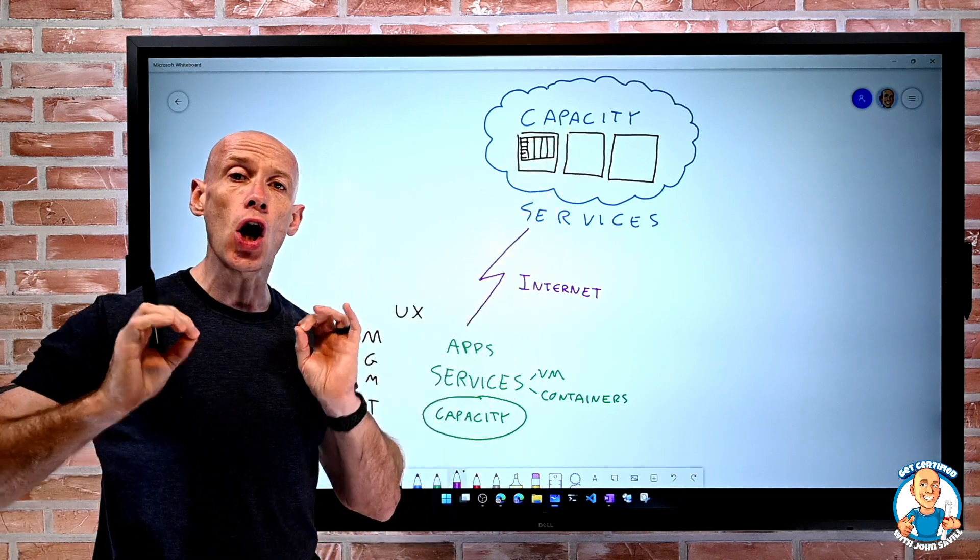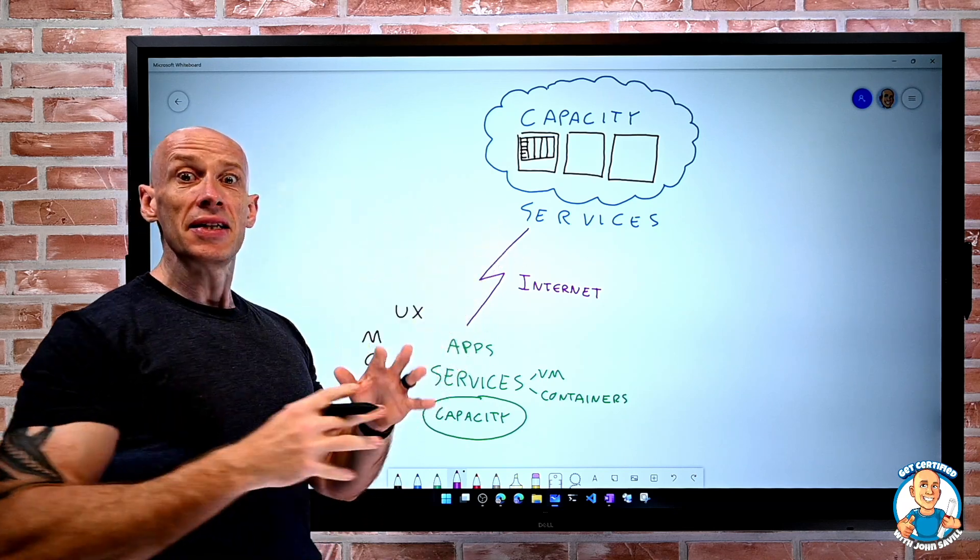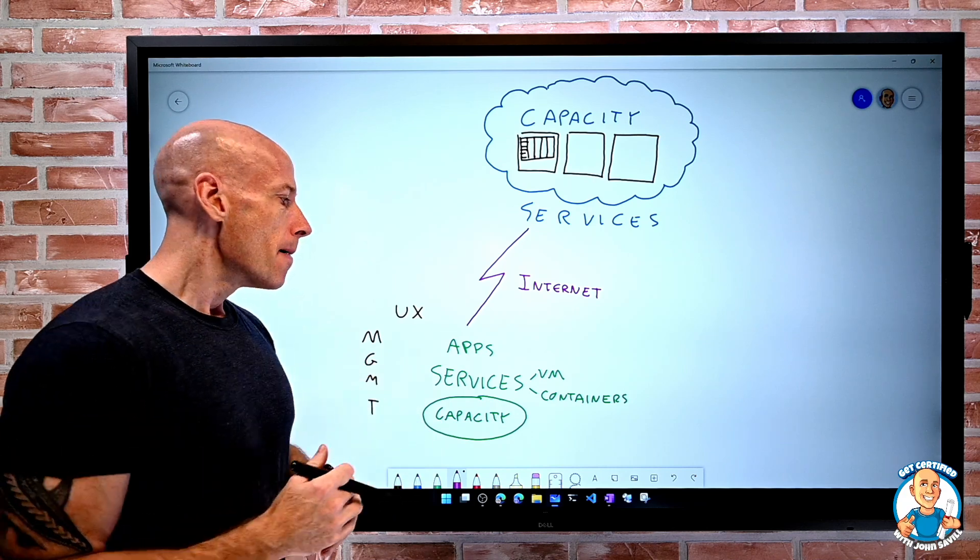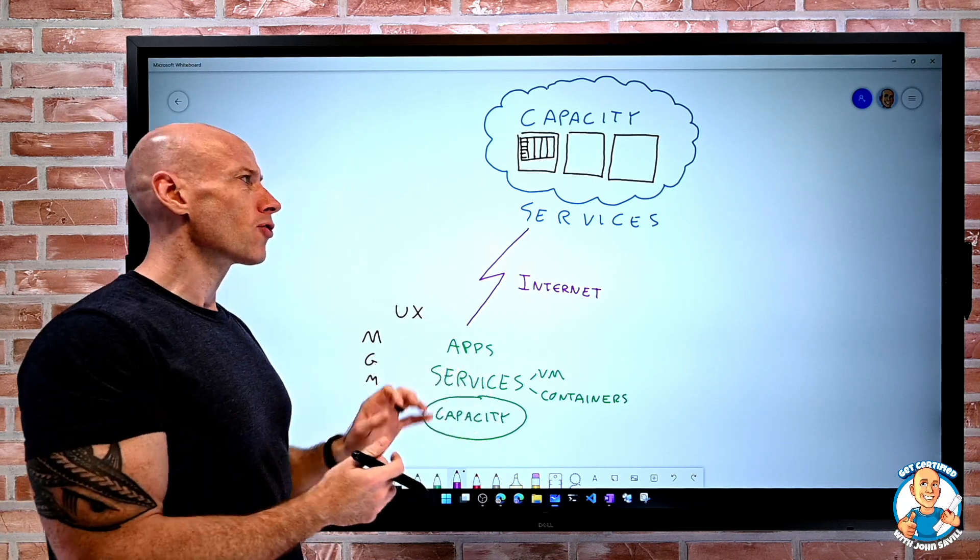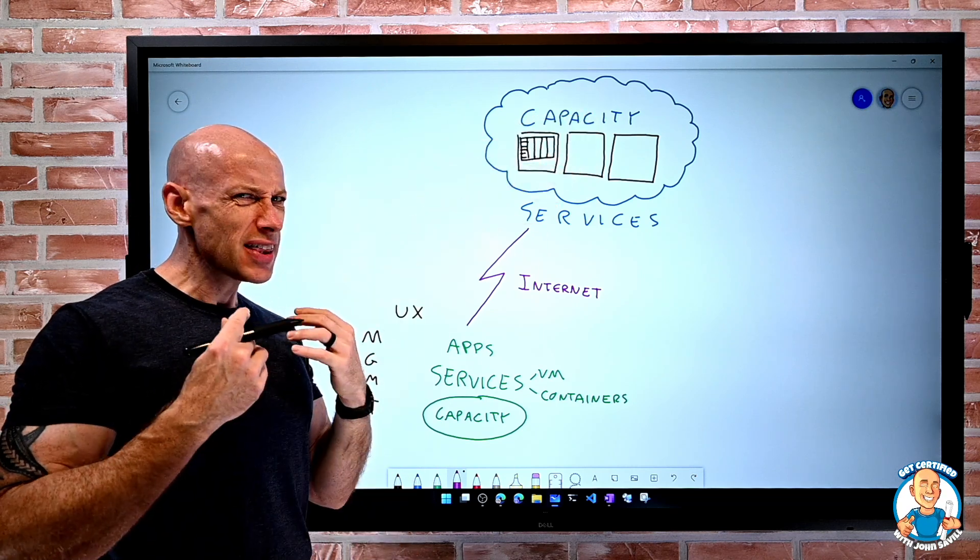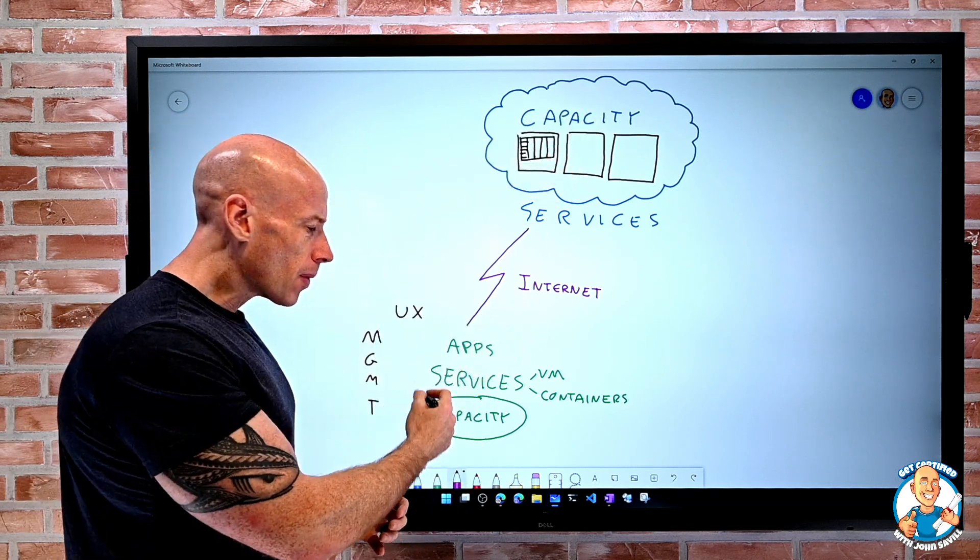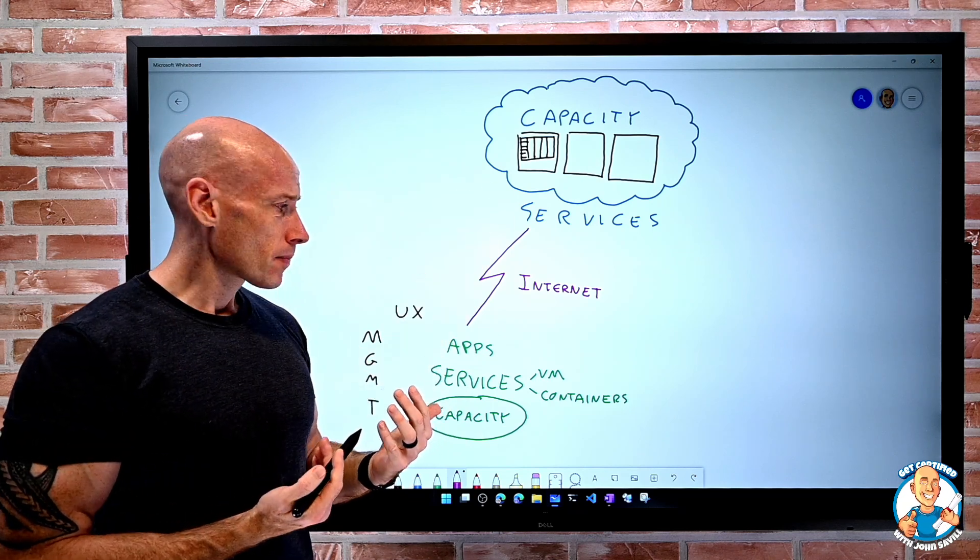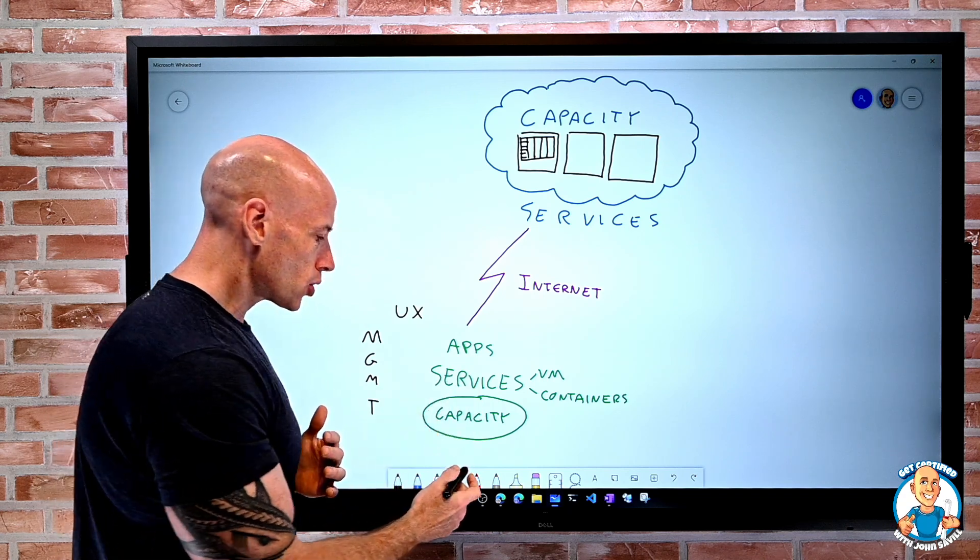Now, it doesn't have to only be the internet. Yes, that's the default mechanism I use to consume cloud services. But if I'm a large organization, I've got huge amounts of service running up in the cloud, and I think of it as an extension of my on-premises data centers, I really don't want to go over the internet.